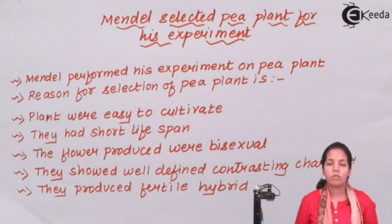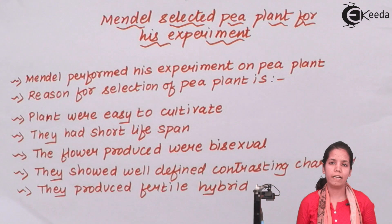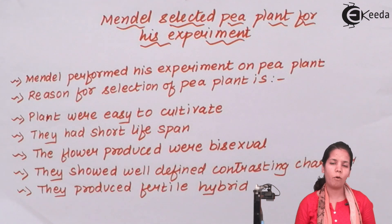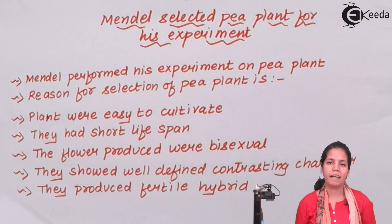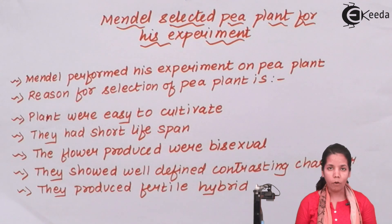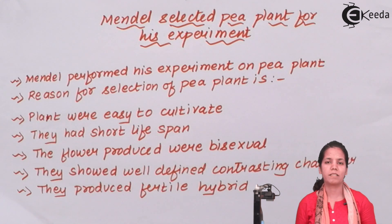That was the reason why Mendel selected the pea plant and developed the various terms we study in genetics today. Mendel is called the father of genetics because the entire field of genetics we study today was started by him through the Pisum sativum experiment. I hope students are now clear on why Mendel selected pea plants for his experiments. Thank you.